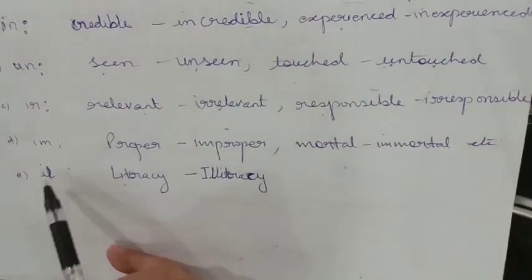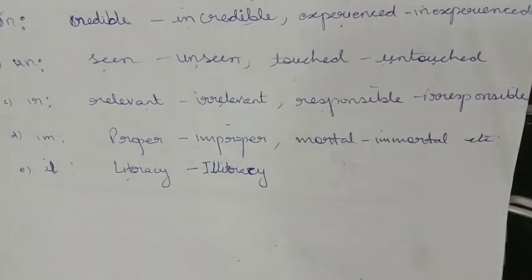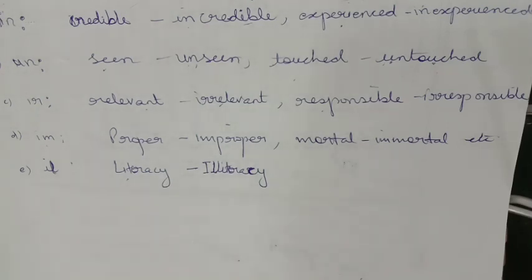The prefix I-M: 'proper' becomes 'improper'. The prefix I-L: 'literacy' becomes 'illiteracy'. So by simply adding a prefix to a word, you can get an adjective.